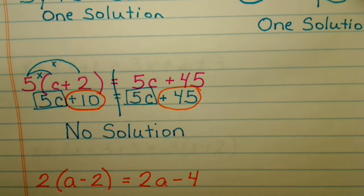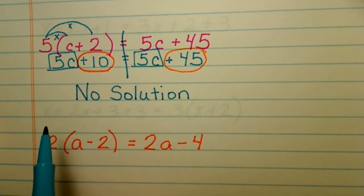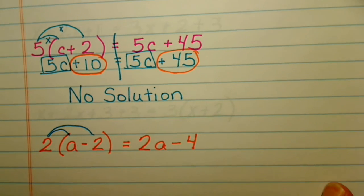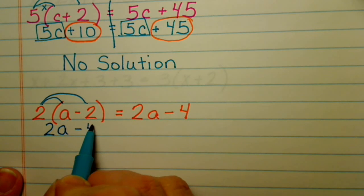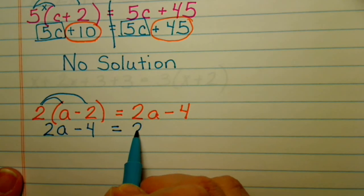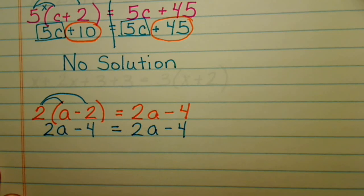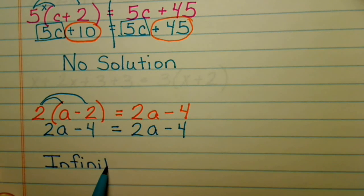Let's look at the last one on this page. First, do the distributive property — multiply the 2 times everything inside the parentheses. That gives 2A minus 4 equals, bring down, A minus 4. Now compare: do we have the same coefficient on both sides with a variable? Yes. Do we have the same constant on both sides? Yes. In fact, we have the same thing on both sides. Therefore, this answer is infinite solutions.